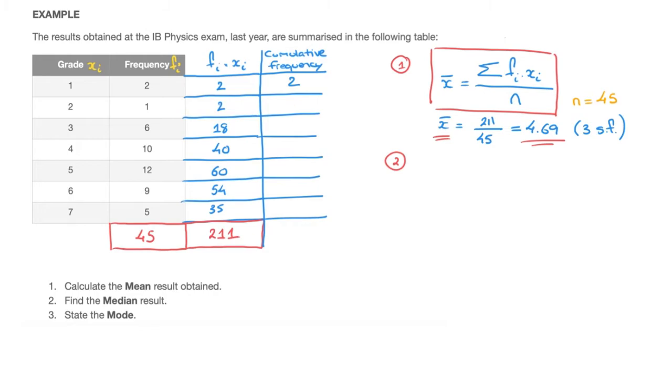To find the next value, I add the next frequency to the 2 we just found. So that's 2 plus 1, which is 3. I carry on this way. For the next value, I do 3 plus 6, which is 9. 9 plus 10 is 19. 19 plus 12 is 31. 31 plus 9 is 40. And finally, 40 plus 5 is 45. A quick check you should always do: the last value in your cumulative frequency column should equal the sum of all the frequencies, which is the case here.